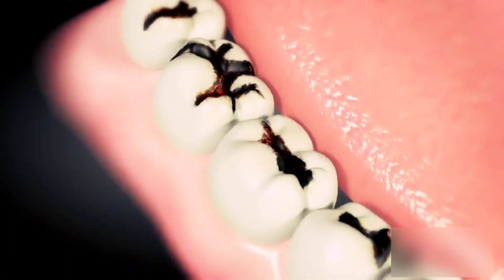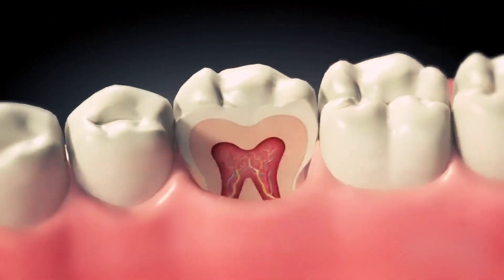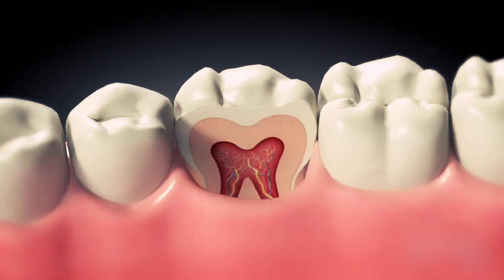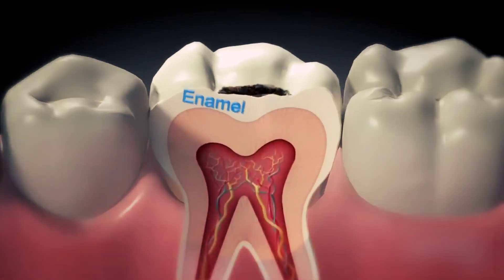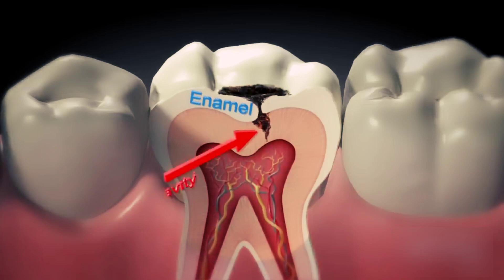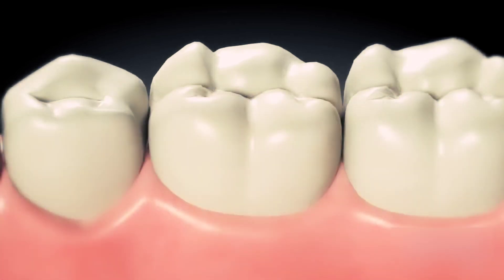Otherwise, your teeth could wind up looking like these. The pits and indentations of your teeth accumulate bacteria. If the bacteria are allowed to stay, bacterial acids and enzymes could break down your enamel. Acids and enzymes from foods and drinks can also dissolve away the enamel.